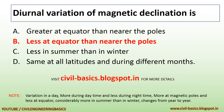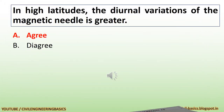Diurnal variation of magnetic declination is less at the equator than nearer the poles. Note: variation in a day is more during daytime and less during night time, more at magnetic poles and less at equator, considerably more in summer than in winter, and changes from year to year. In high latitudes, the diurnal variations of the magnetic needle are greater.